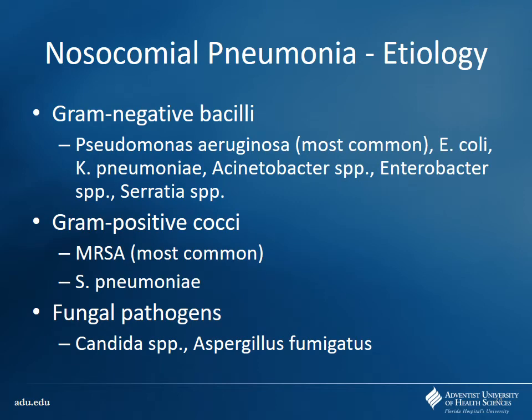Common bugs in nosocomial pneumonia are gram-negative bacilli - Pseudomonas is most common, along with E. coli, Klebsiella, and Acinetobacter. These spread resistance among each other via plasmids. Gram-positive coverage still includes Strep pneumo but MRSA is much more prominent. In immunosuppressed patients, also consider fungal pathogens like Candida or Aspergillus.